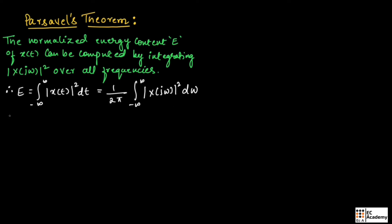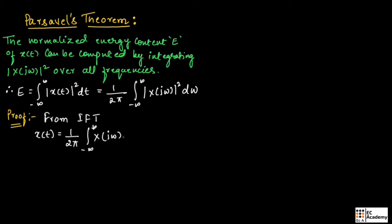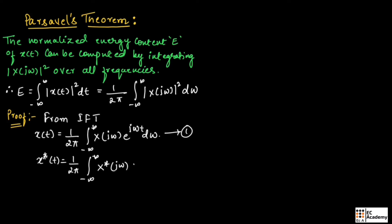Now let us prove this from the inverse Fourier transform. We can write X(t) equal to 1 by 2π times the integration from minus infinity to infinity of X(jω) into exponential to the power of jωt dω. Let us call this equation number 1. Now we can write the complex conjugate of the above equation as X*(t) equal to 1 by 2π times the integration from minus infinity to infinity of X*(jω) exponential to the power of minus jωt dω. Let us call this equation number 2.